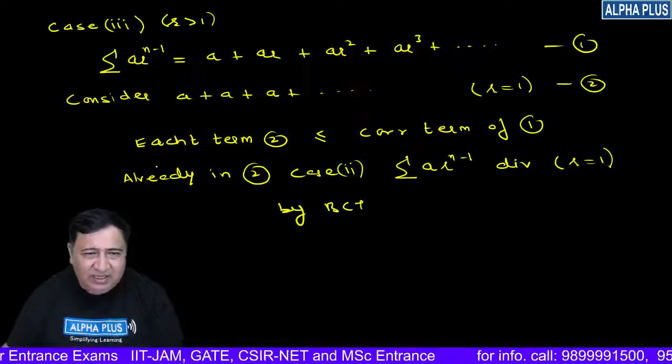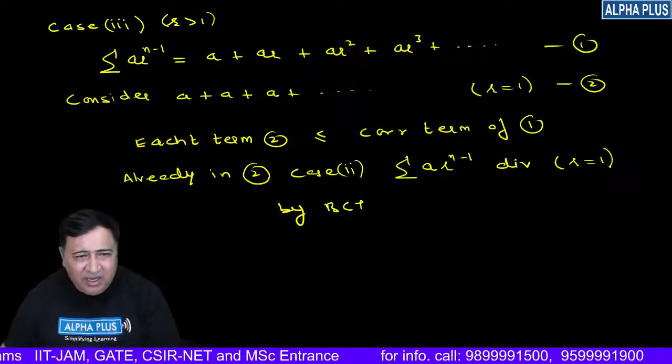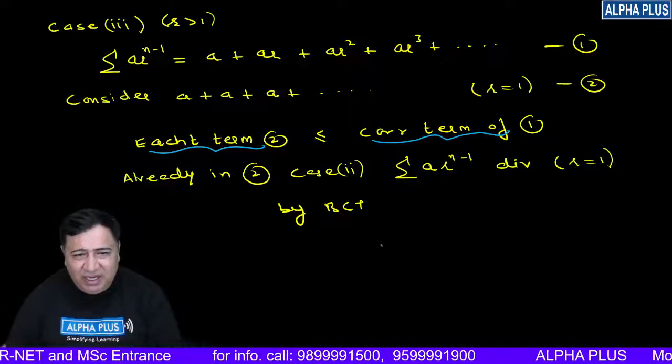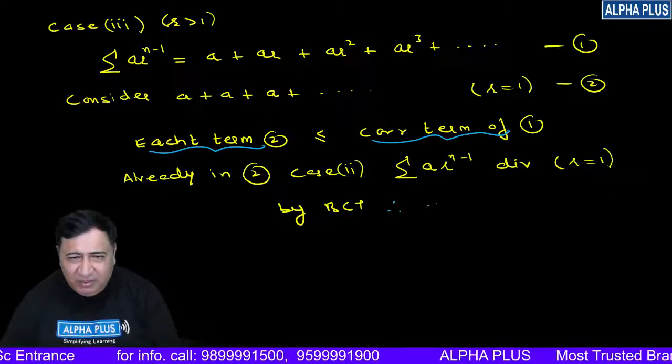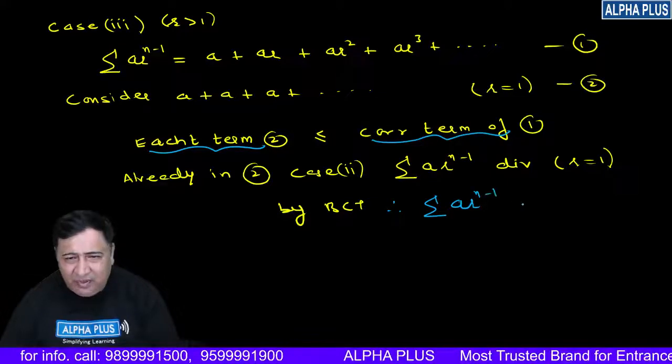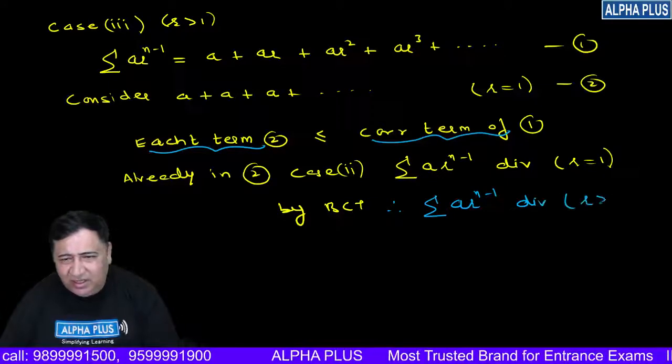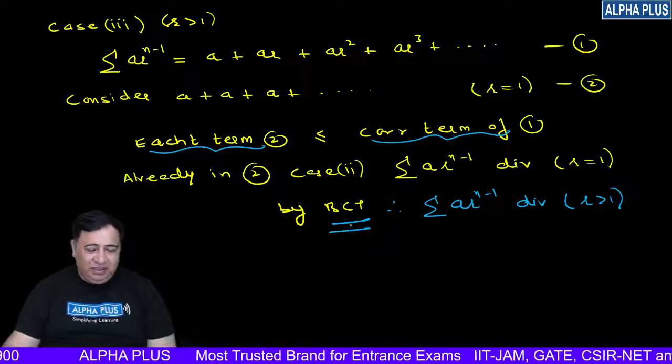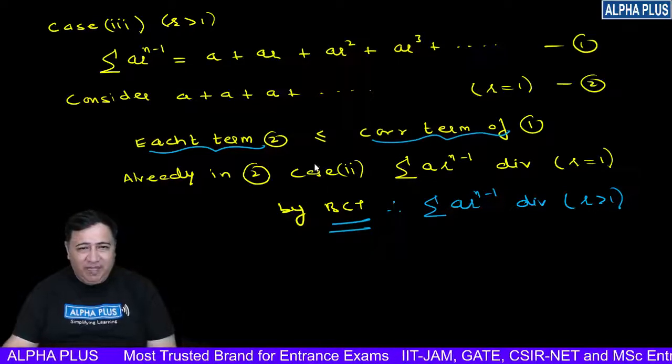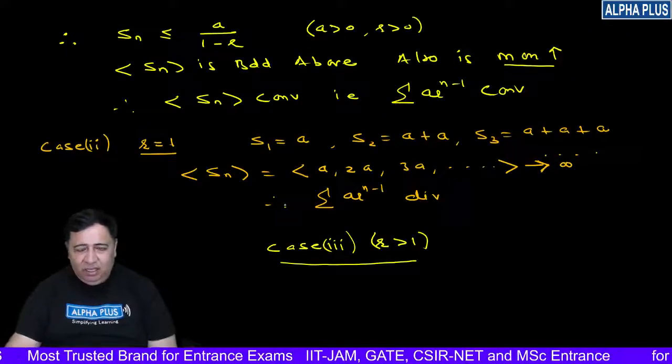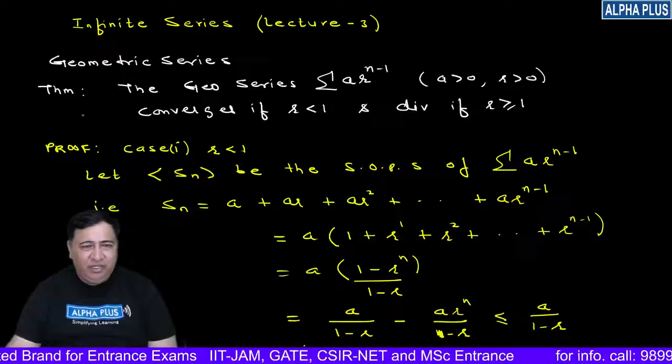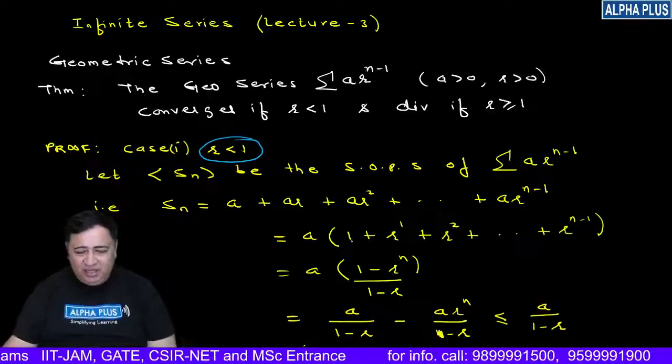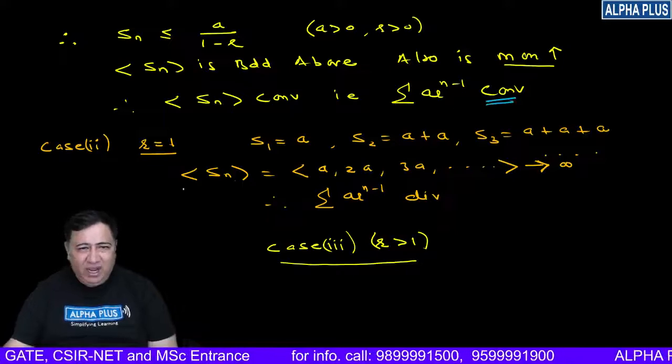So by basic comparison test, if the previous series diverges students, then the next series will also diverge. Therefore, by basic comparison test, the series a·r^(n-1) diverges if r is greater than 1.